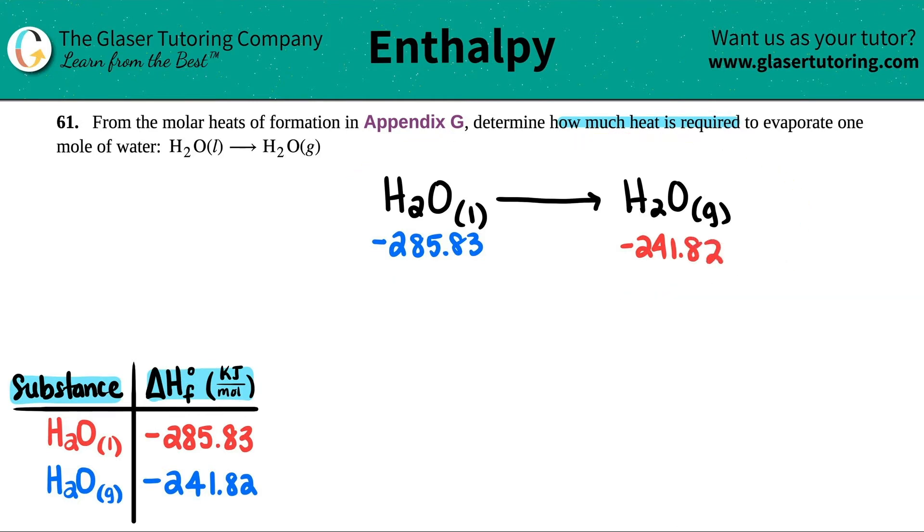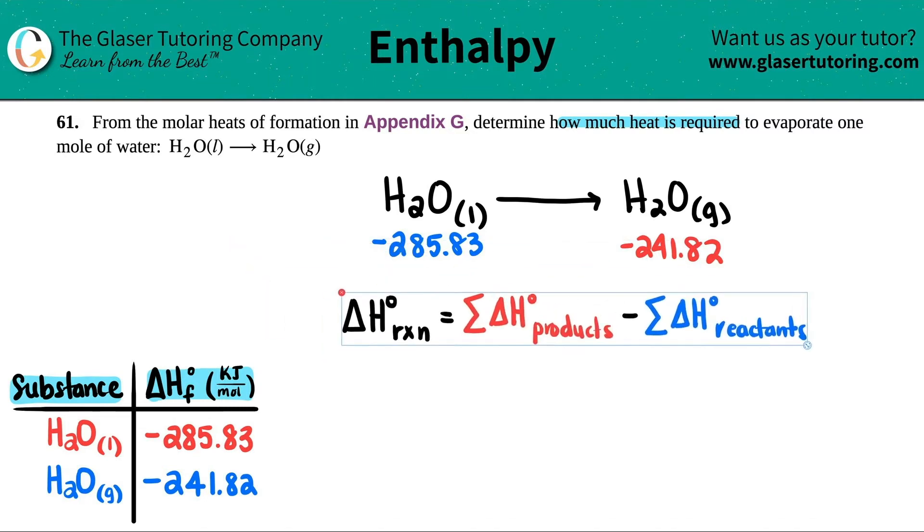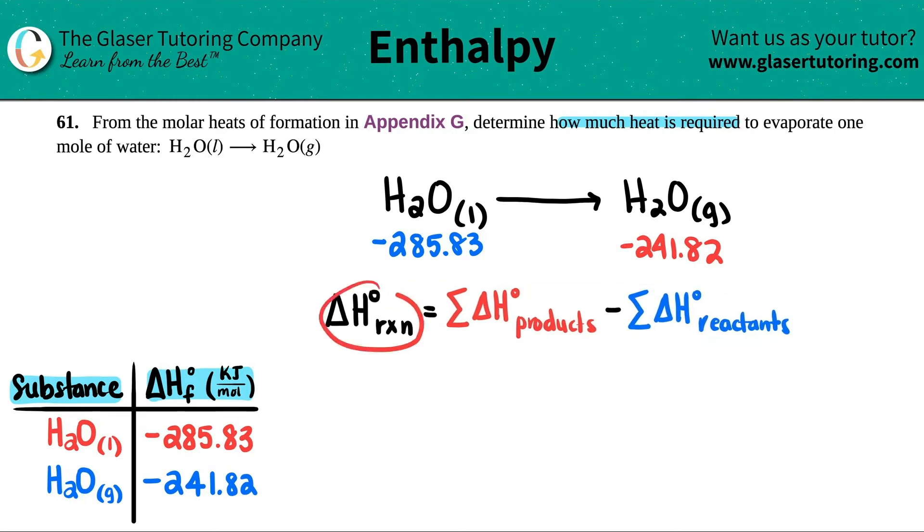And now I just want to find out the delta H for the overall reaction. Well, it's a pretty easy formula. Whenever you want to find a delta H for a whole reaction, all you have to do is just take the sum—which is this funky little symbol here—so take the sum of the products and minus the sum of the reactants. So it's always products minus reactants.